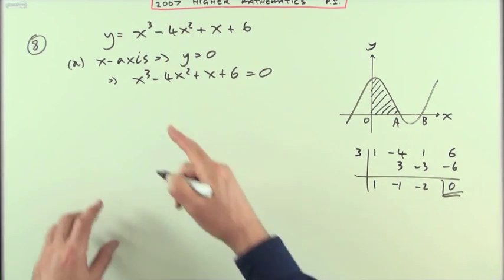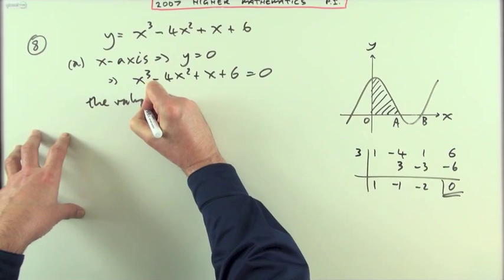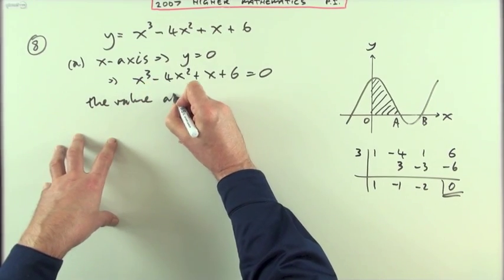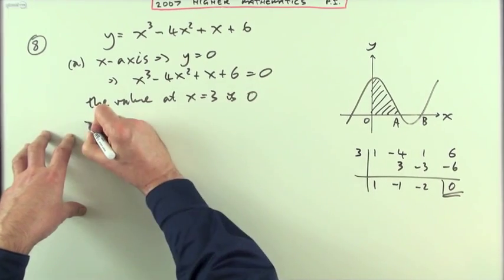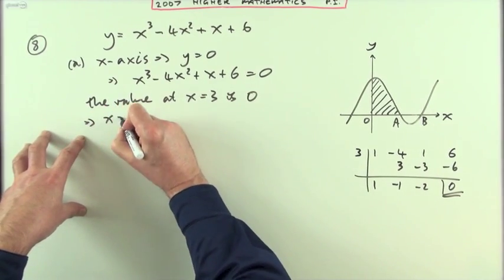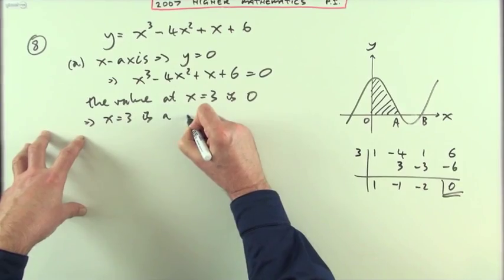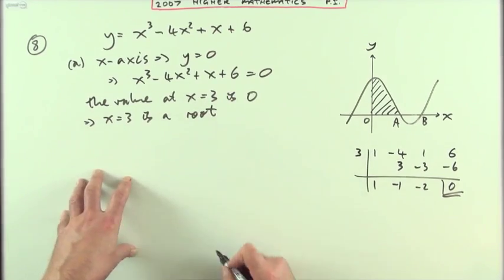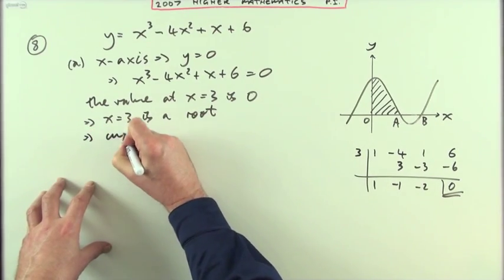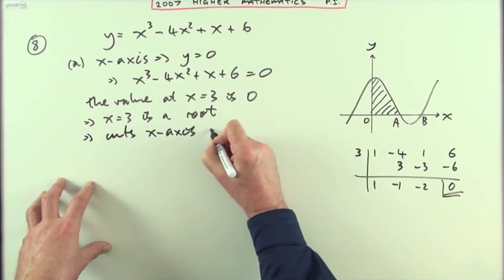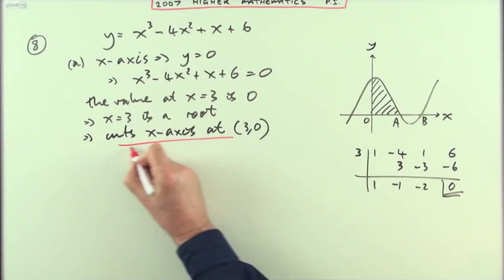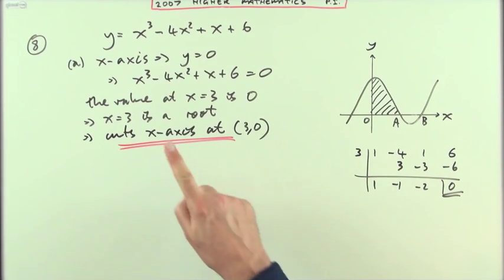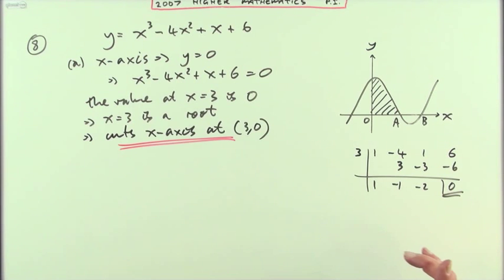I've got an answer of zero, which says the value at x equals 3 is zero, which means that x equals 3 is a root, which means it cuts the x-axis at (3,0). Notice it was the roots and values I was using here rather than the factors and remainders.